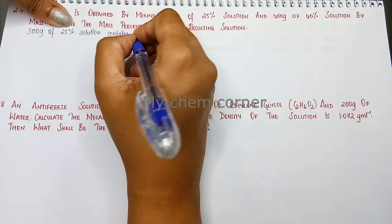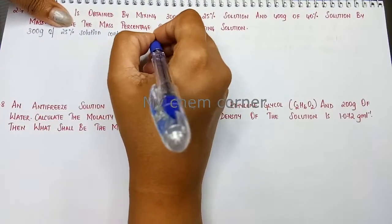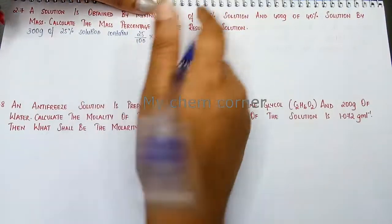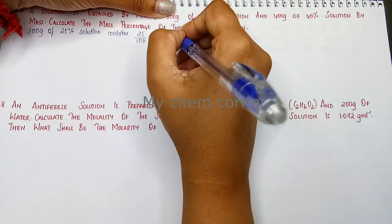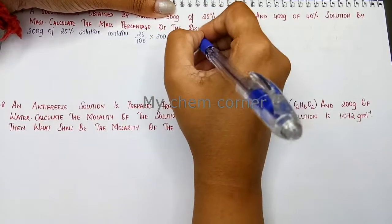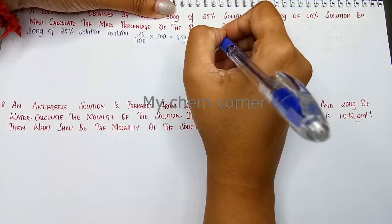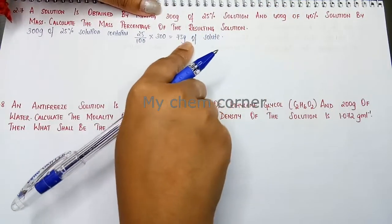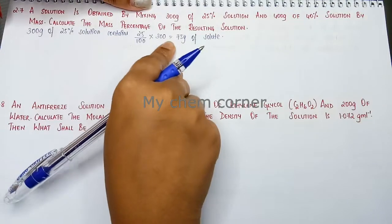So if I simplify this, this is going to be 75 grams of solute. Alright, so from the solution, 75 grams is going to be the solute of 300 grams of solution.